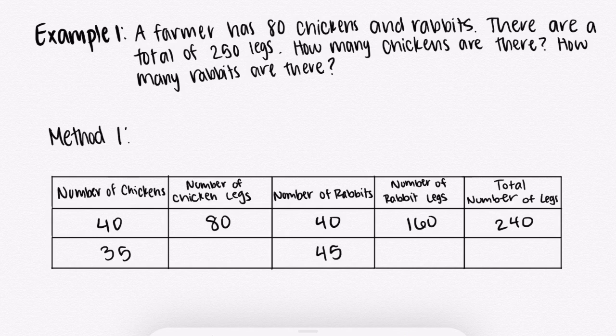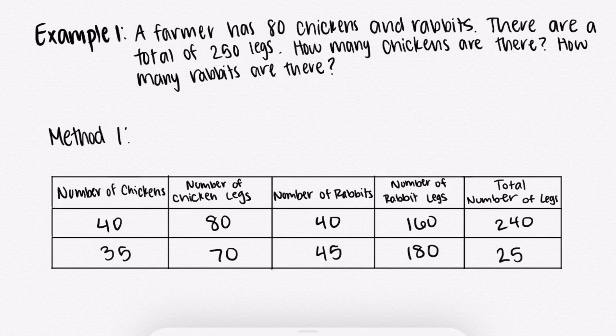Let's check if this combination works. With 35 chickens, we will have 70 chicken legs. And for 45 rabbits, we will have 180 rabbit legs. When we add up the chicken legs and the rabbit legs, we get 250 legs, which shows that 35 chickens and 45 rabbits is the correct combination.